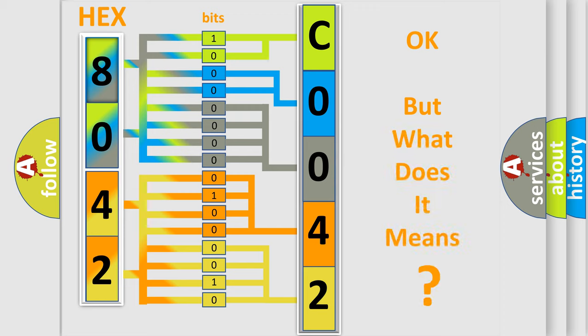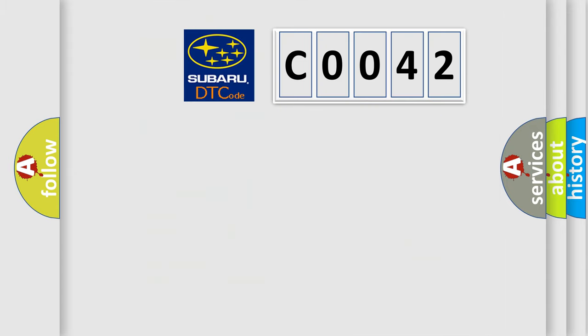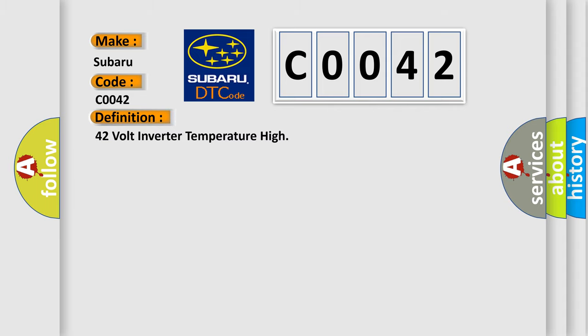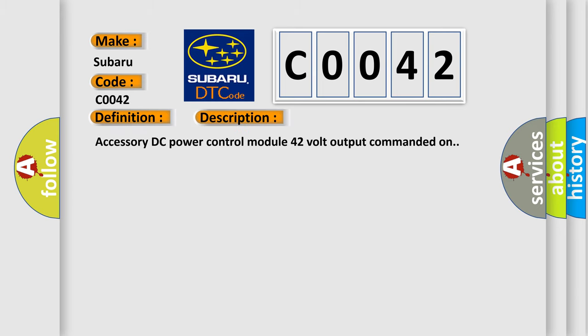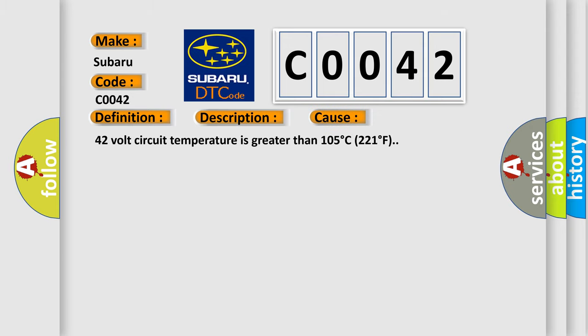We now know in what way the diagnostic tool translates the received information into a more comprehensible format. The number itself does not make sense to us if we cannot assign information about what it actually expresses. So, what does the Diagnostic Trouble Code C0042 interpret specifically for Subaru car manufacturers? The basic definition is: 42 Volt Inverter Temperature High. The short description: Accessory DC Power Control Module 42 Volt Output Commanded On. This diagnostic error occurs most often when the 42 Volt Circuit Temperature is greater than 105°C (221°F).